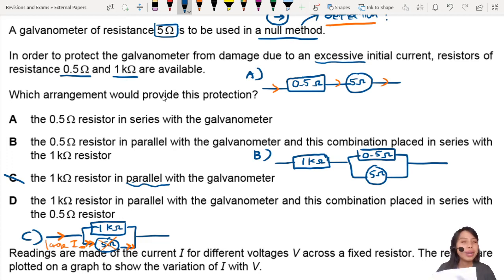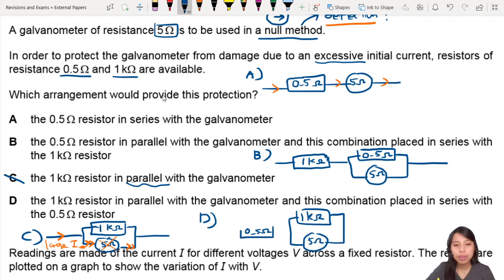Let's look at D. 1kΩ resistor in parallel with the galvanometer. Okay, we have the same problem. And this combination in series with the 0.5Ω resistor. So 0.5Ω now will be over here.